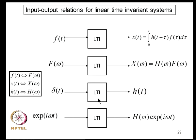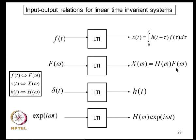A general framework for input-output relations for linear time-invariant (LTI) systems: if the forcing function F is specified in the time domain, the output is obtained via convolution with the impulse response function H. If the input is specified in the Fourier domain, the output equals the product of the Fourier transform of F and the frequency response function H—an algebraic operation rather than a convolution integral. This algebraic simplicity is one key reason for working in the frequency domain.